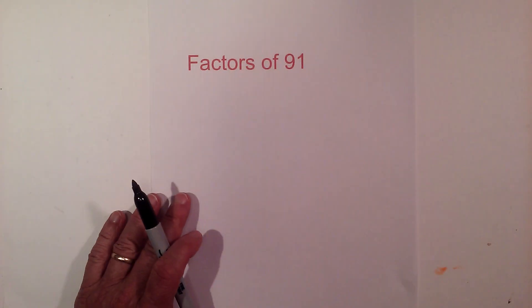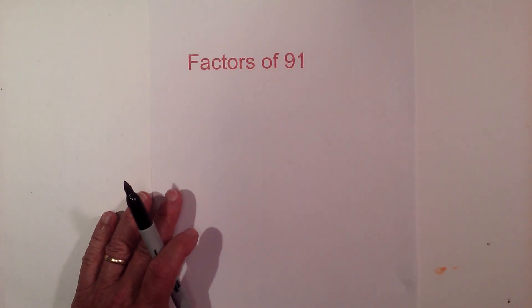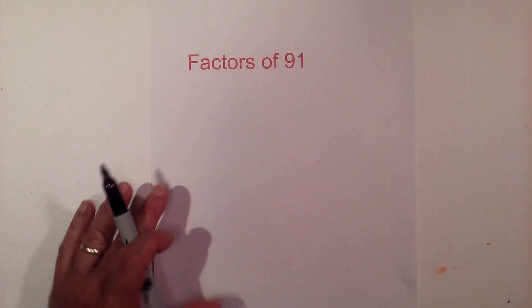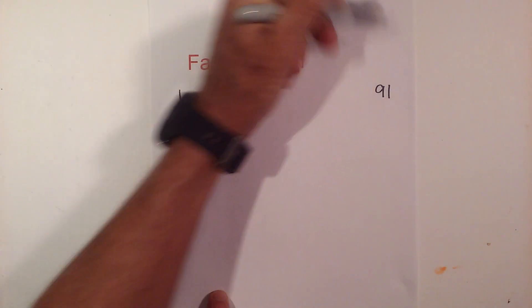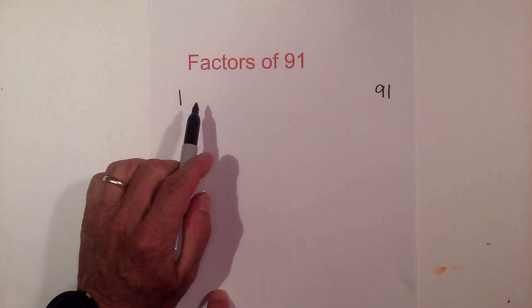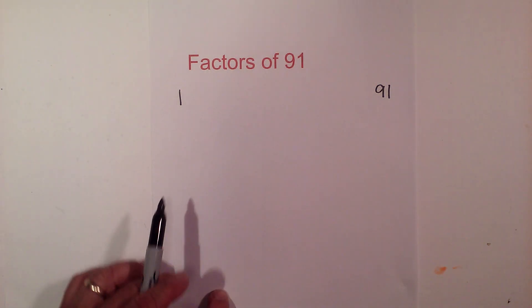The factors of 91, the prime factors of 91, and then the multiples of 91. So let's get started. I like to start with 1 times 91 and then find all the numbers that multiply together to equal 91.